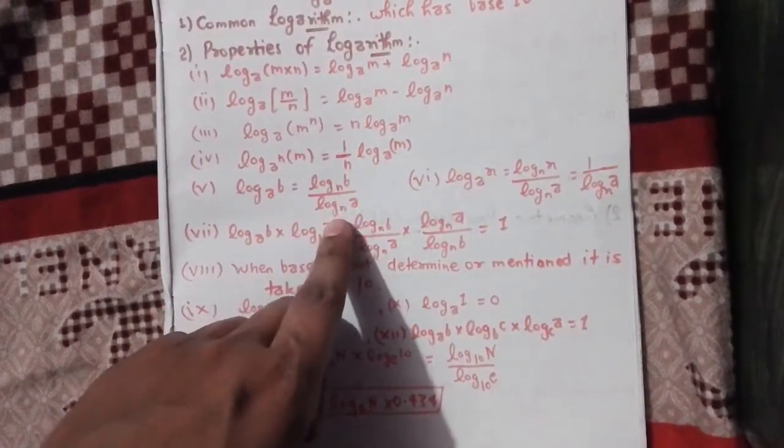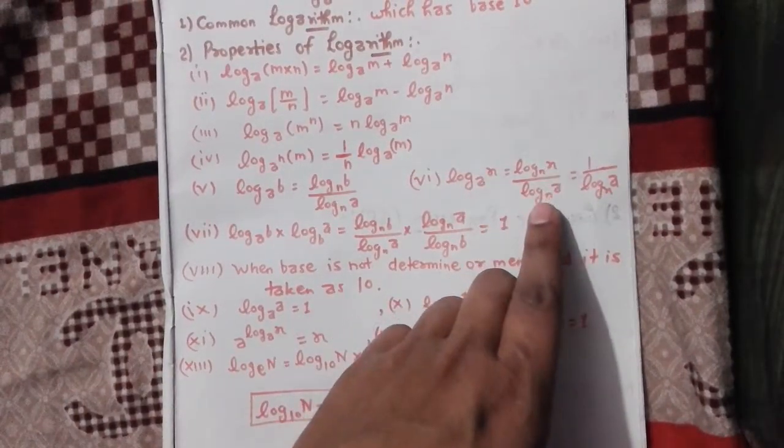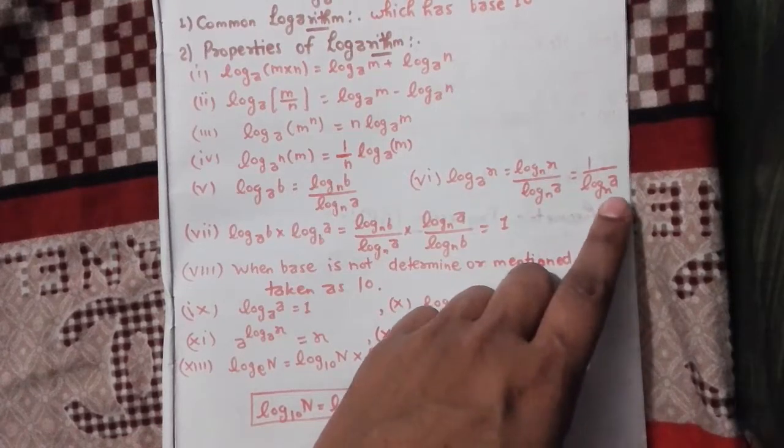Log_a(nth root of m) equals 1/n log_a m. Log_a b equals log_n b over log_n a. Log_a x equals log_n x over log_n a.